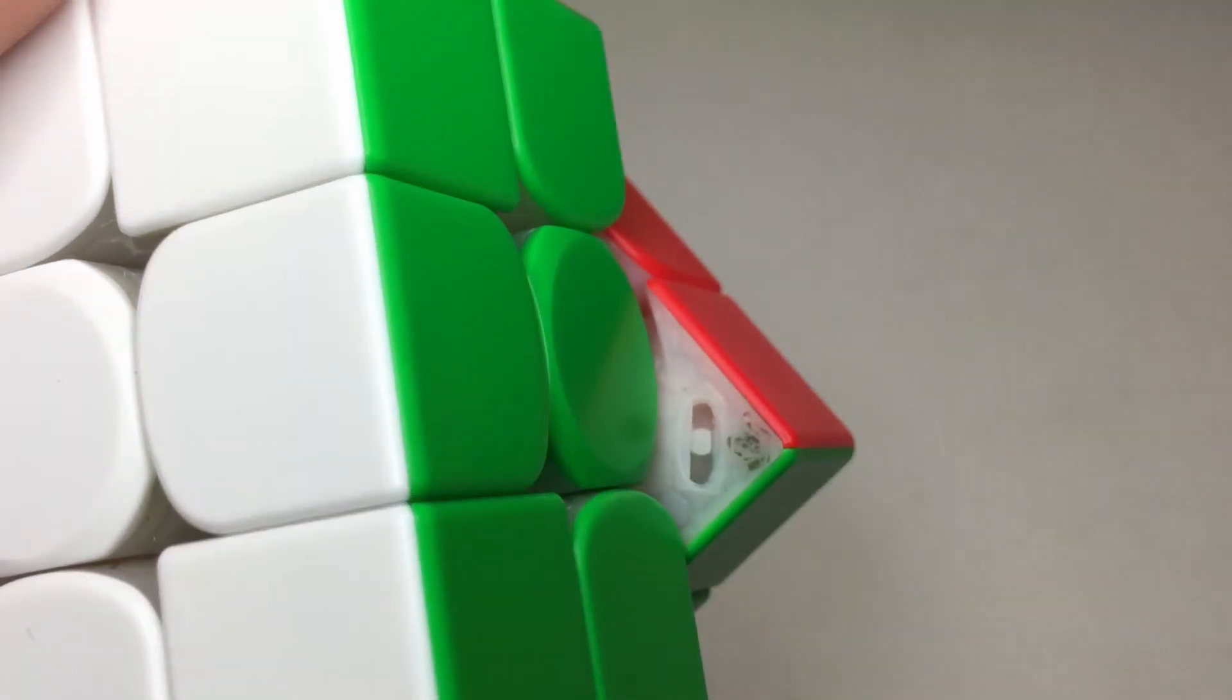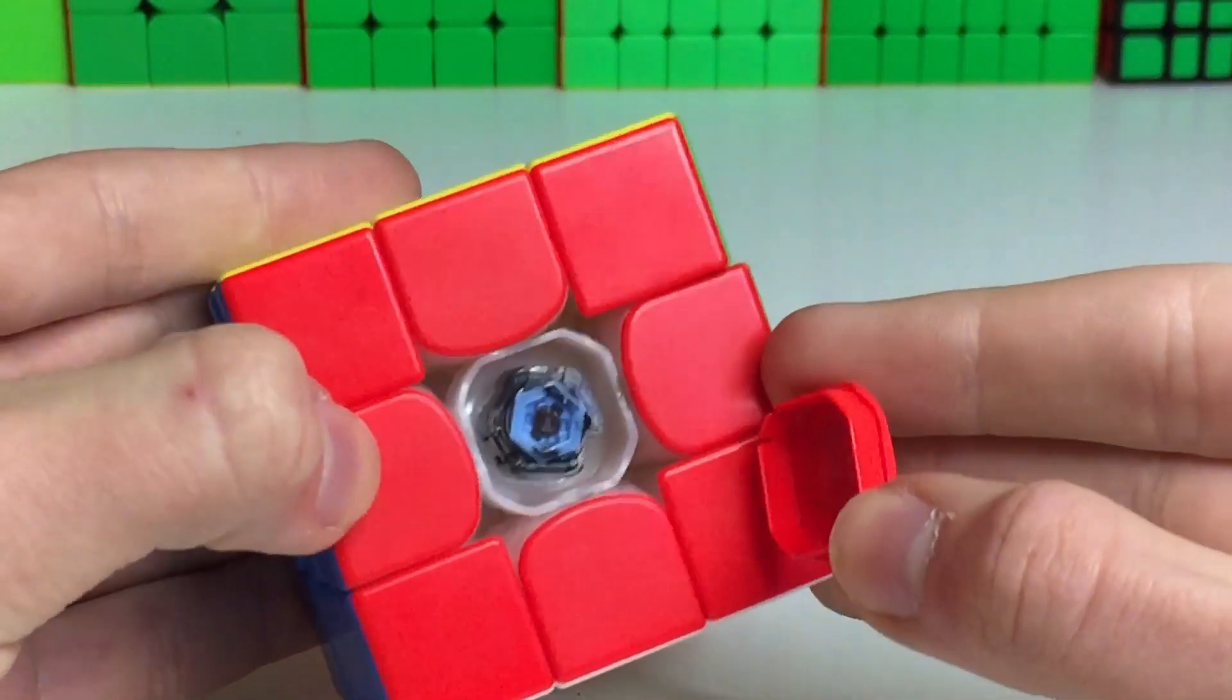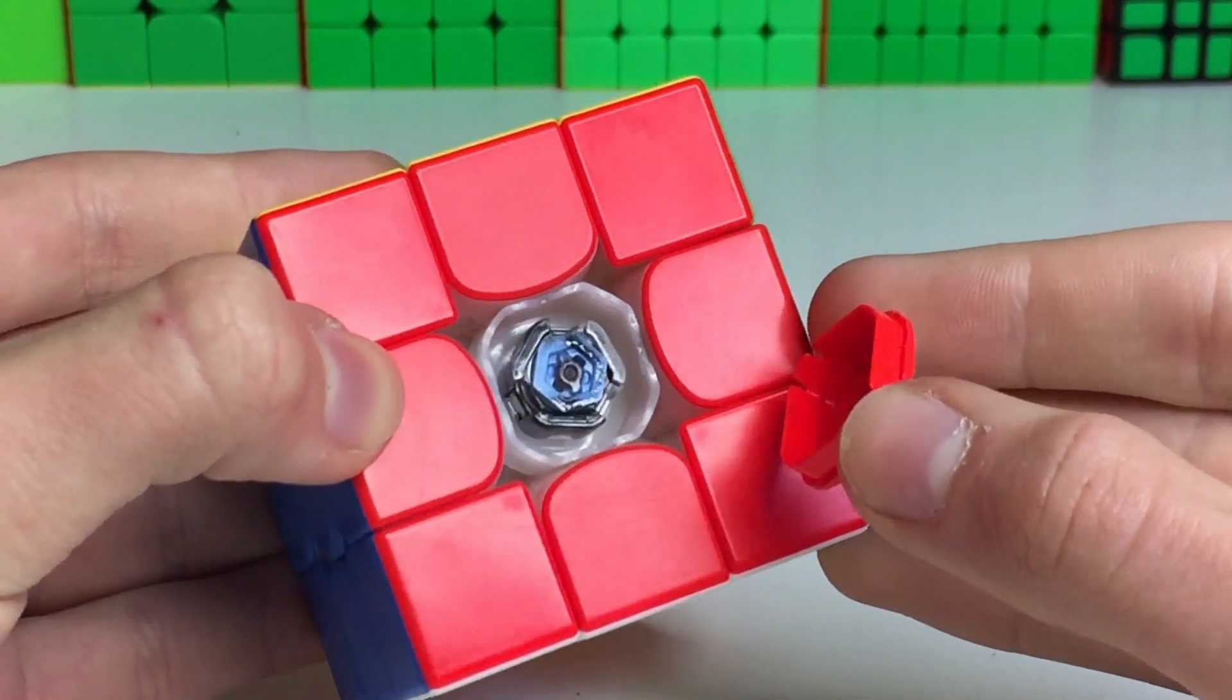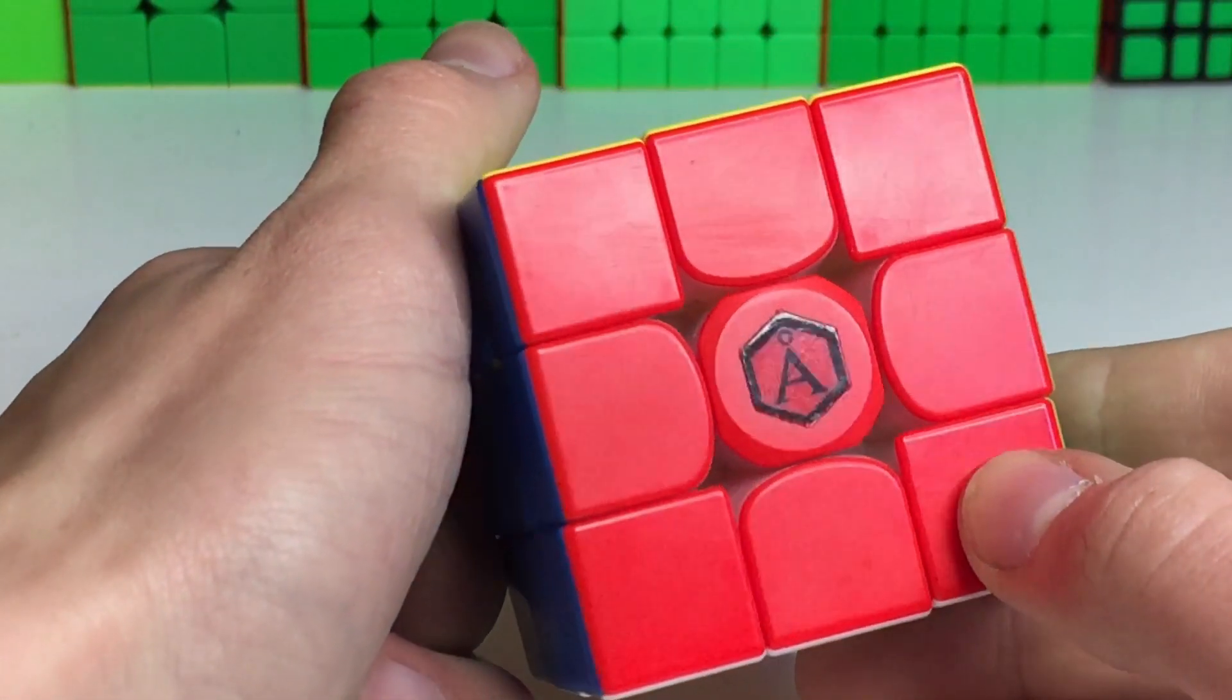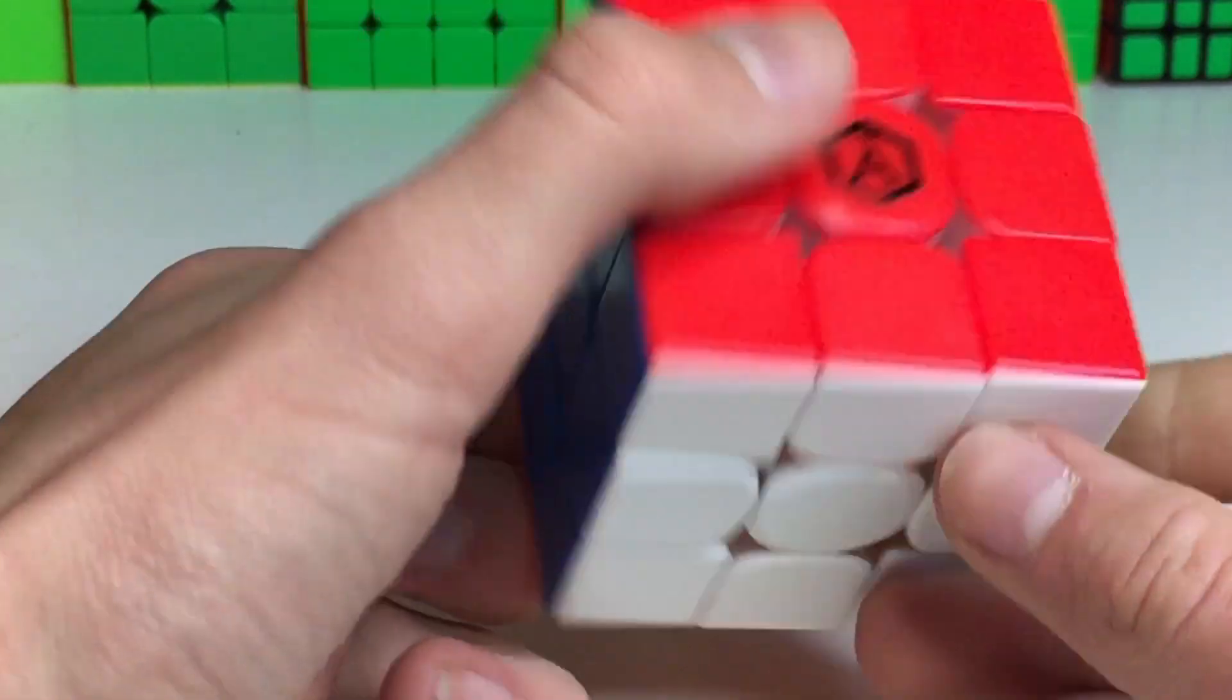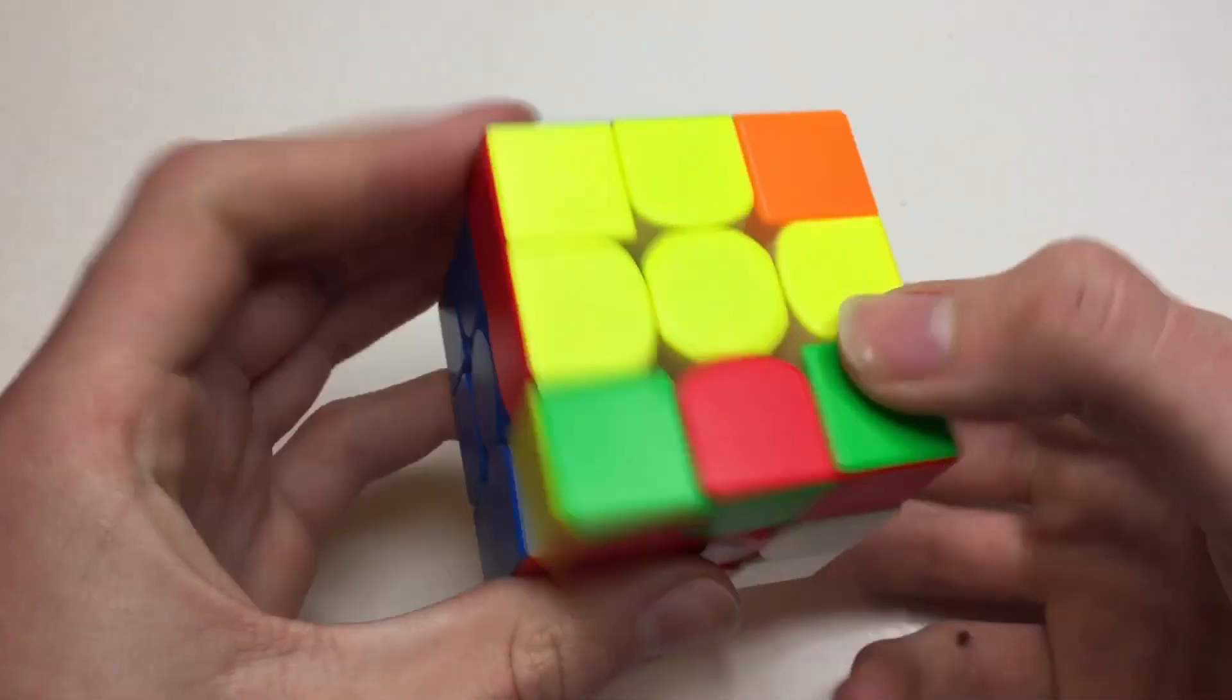The magnets are set to the medium setting and the tensions are set to setting one, and the spring compressions are set to the third click. These settings are the exact same as what you would get out of the box, so nothing there has changed.